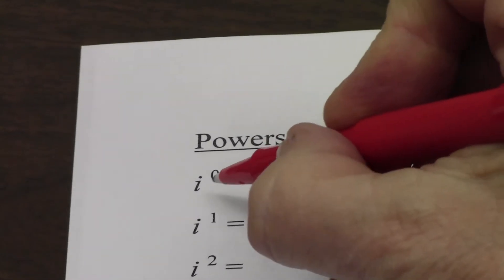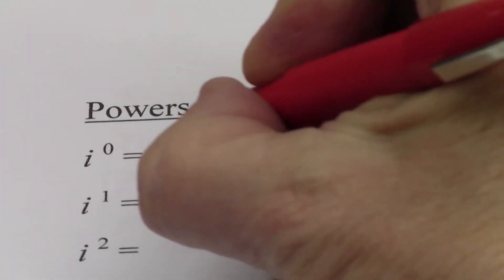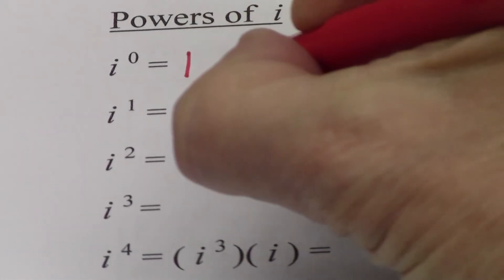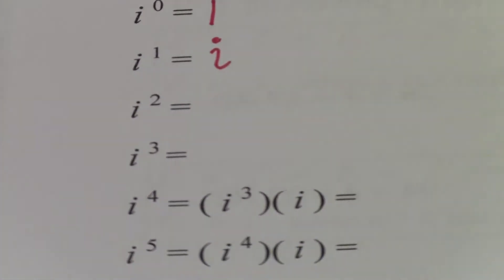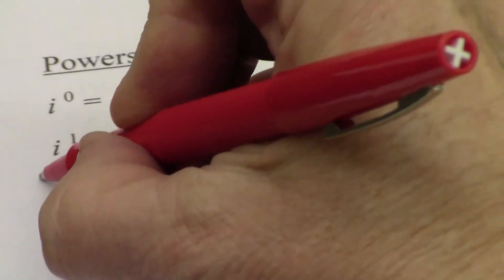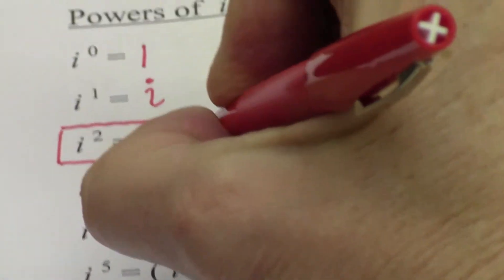Next we're going to look at powers of i. I have a big list starting with i to the zero power and going all the way to i to the sixteenth power, and somewhere in this process you should start seeing some repetition and patterns. i to the zero power is one, just like any number to the zero power. i to the first power is i, just like any number to the first power equals itself. And i squared — that's the reason i exists — i squared equals negative one, which is what's really special and unique about i.